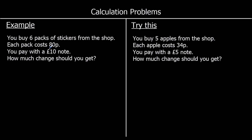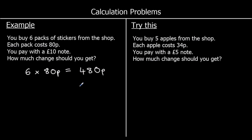So we're going to do the total cost, which is 6 times 80p. 6 times 8 is 48, so 6 times 80 is 480. So we've got 480p, or we could write that as £4.80.